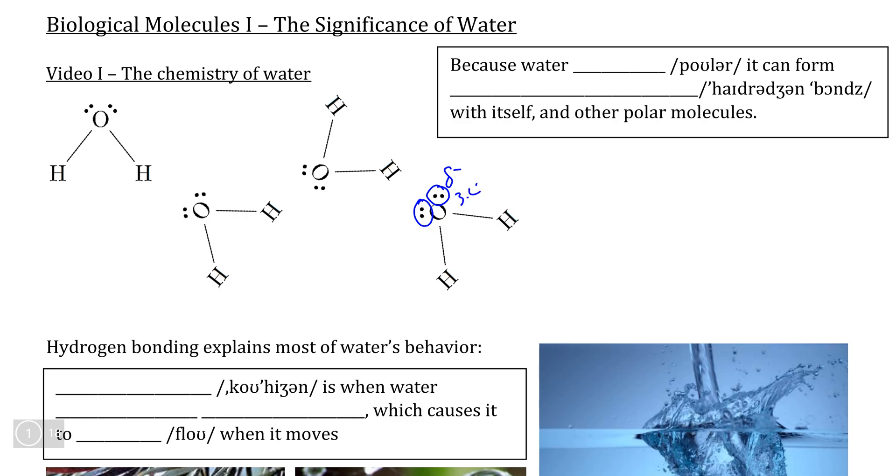If we add electronegativity to our analysis, we also recognize that oxygen has a much stronger attraction for electrons than hydrogen does, meaning that the electrons in the bonds are going to be pulled towards oxygen, enhancing the negative pole from the lone pairs on oxygen and giving the hydrogens positive poles.